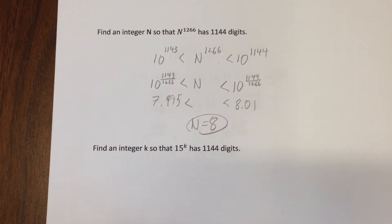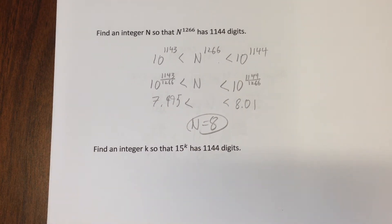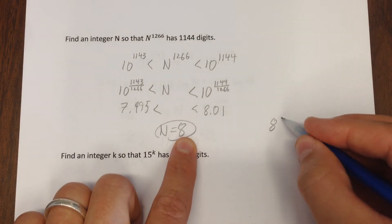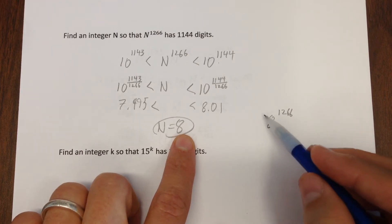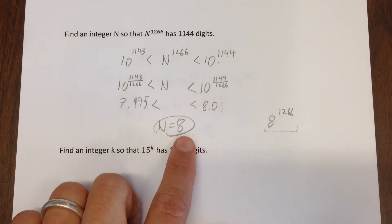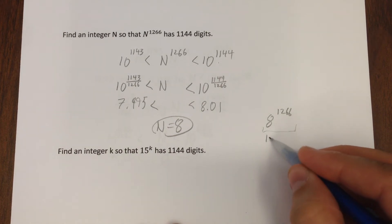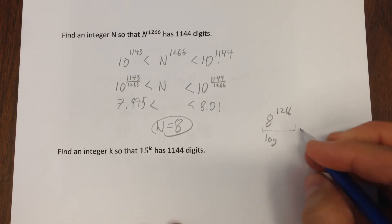So that's how that works out, you can check it, but not of course the conventional way because 8 to the 1266th is way bigger than your calculator can sort of handle, but if you want to know how many digits it has.